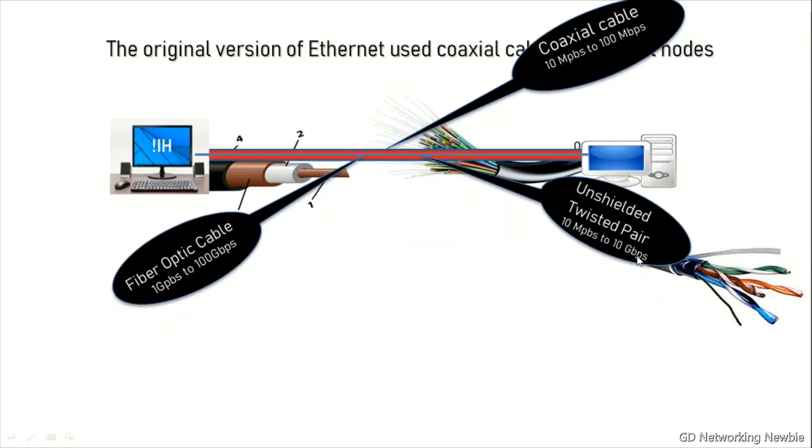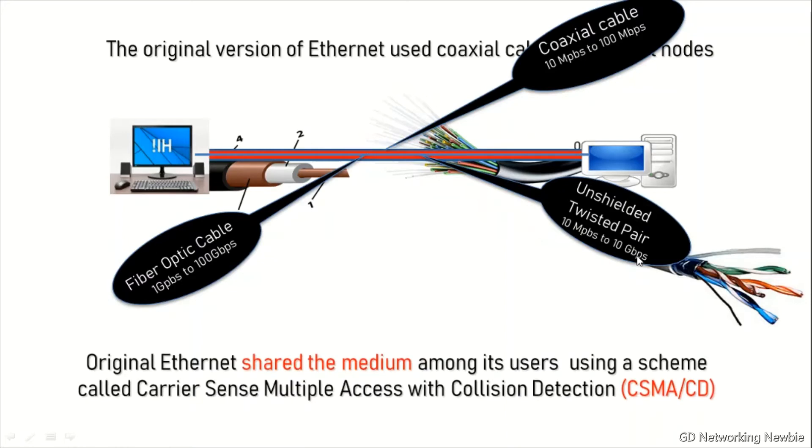After that, fiber optics cable was introduced and it offered 1 gigabits per second to 100 gigabits per second. The reason was that in fiber optics cable the information is converted into light and this cable actually carries a light signal as information.